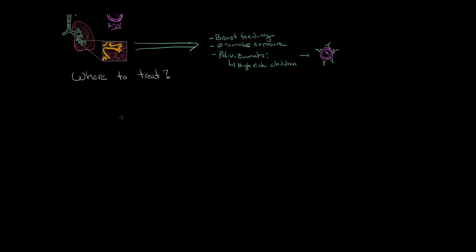The first factor is the risk of developing severe disease. Some of the factors that would put a child at high risk for developing severe disease would be things like prematurity, age less than three months, or pre-existing heart or lung disease. Any child that doesn't have any of these factors would be considered low risk.